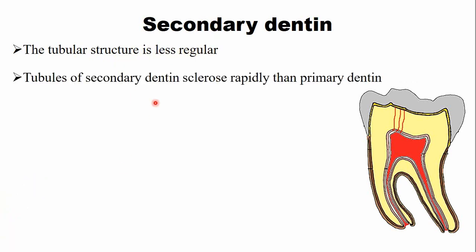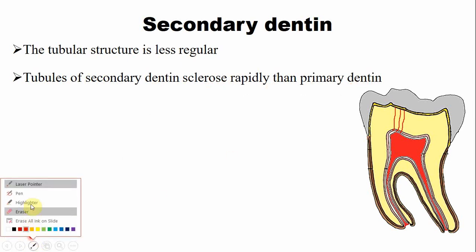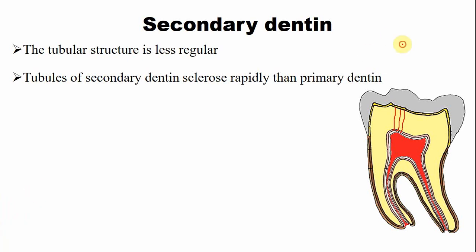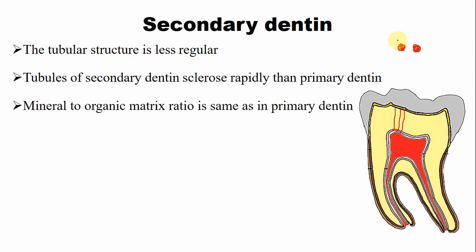The tubules of the secondary dentine sclerose more rapidly than those of the primary dentine. These tubules become occluded or sclerosed, and this sclerosis is more pronounced in secondary dentine compared to primary dentine in order to protect the vitality of the dental pulp. The mineral to organic ratio is the same in both primary and secondary dentine.